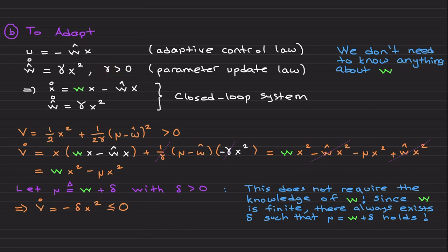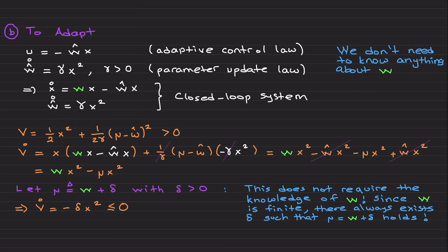When you close the loop by inserting the adaptive control signal into the uncertain system, you get ẋ = wx - ŵx. The closed loop system now has one more state: ŵ. These two differential equations together represent the closed loop behavior. In the Lyapunov analysis you need to consider both terms together. I start with the first term, similar to before: ½x² — positive definite. Now I add a second term involving (μ - ŵ), where you'll see what μ is shortly.